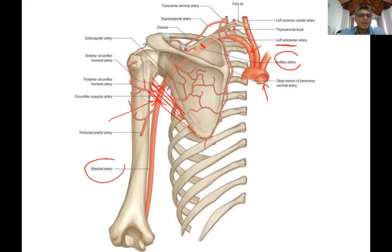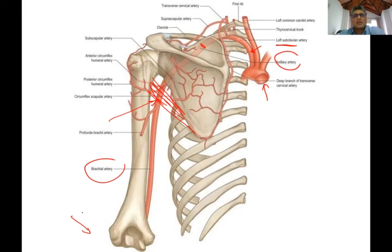The brachial artery continues until it divides in the cubital fossa into its two main terminal branches: the ulnar artery and the radial artery. We will discuss its branches little by little - I might miss certain branches, but take the big picture.